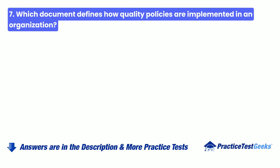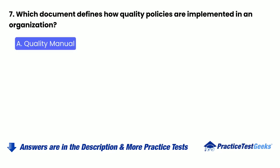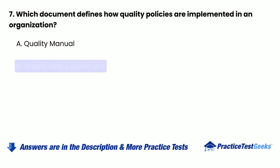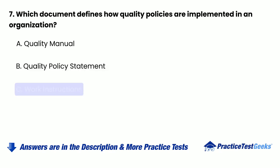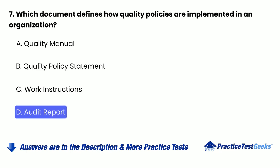7. Which document defines how quality policies are implemented in an organization? a. Quality manual. b. Quality policy statement. c. Work instructions. d. Audit report.